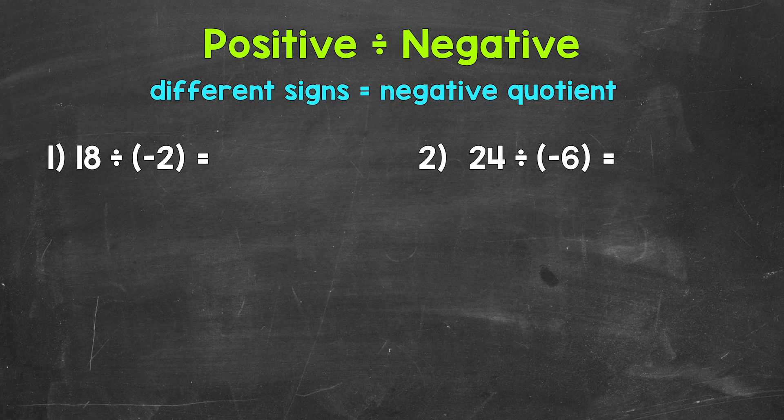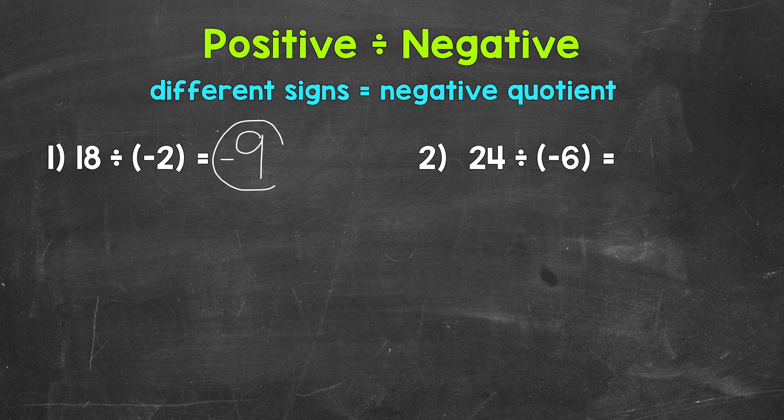Just like when we multiply integers, different signs equal a negative answer. Let's think of this as 18 divided by 2, which is 9. And this is going to be negative because again, we have different signs.